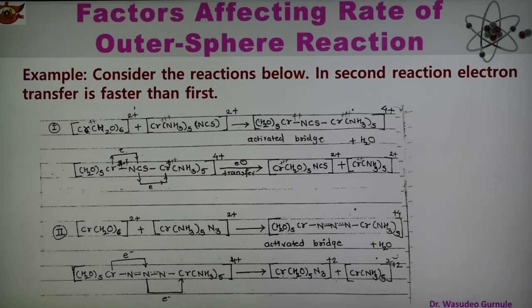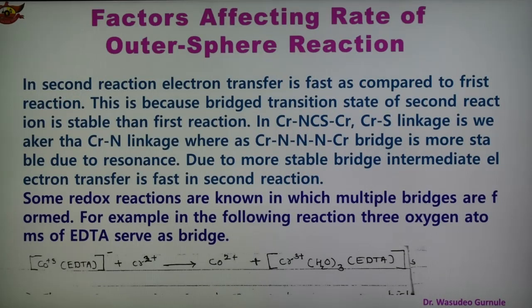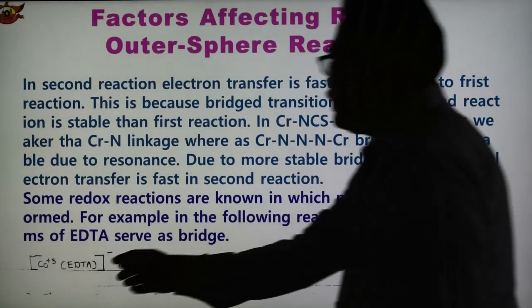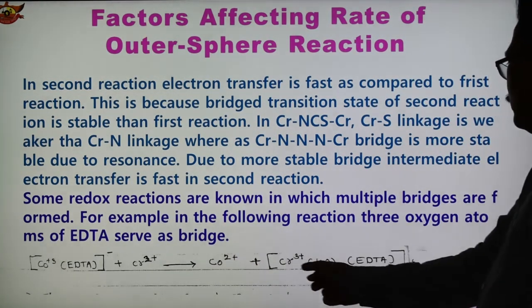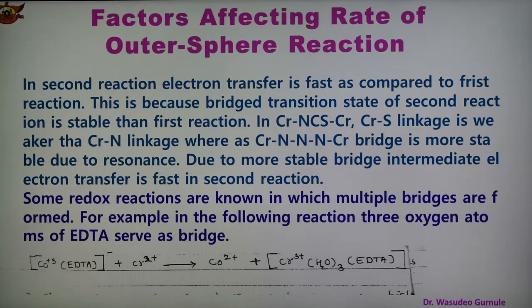Some redox reactions are also known in which multiple bridges are formed. An example is given where 3 oxygen atoms of EDTA act as bridges. This is a cobalt complex with EDTA reacting with chromium(II), where cobalt(II) is released and chromium(III) with EDTA metalline is formed. So such type of reaction with multiple bridge formation is also possible. This is the third factor which affects the rate of outer sphere reaction.